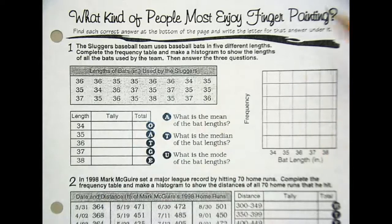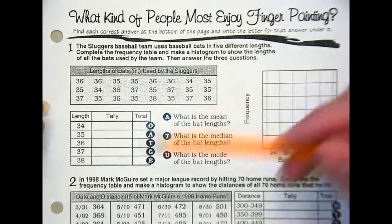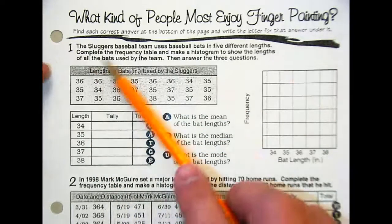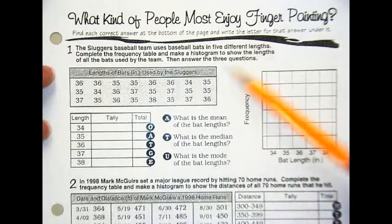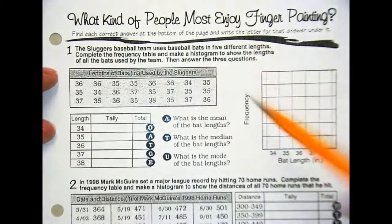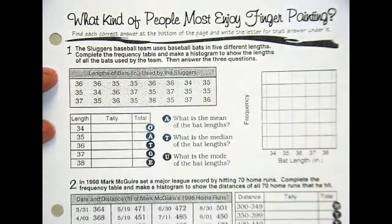So everyone checking out the front page here, you're dealing with frequency tables. Remember yesterday when we did our overview, a frequency table is just where you're tallying up things. In this first one, the sluggers of a baseball team uses baseball bats in five different lengths. Complete the frequency table, make a histogram to show the lengths of all the bats used by the team, answer the three questions.